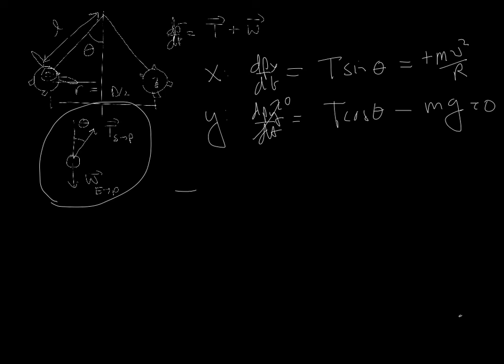So really, I end up with two equations. I end up with mv²/r is equal to T times the sine of theta. And I end up with mg is equal to T times the cosine of theta.